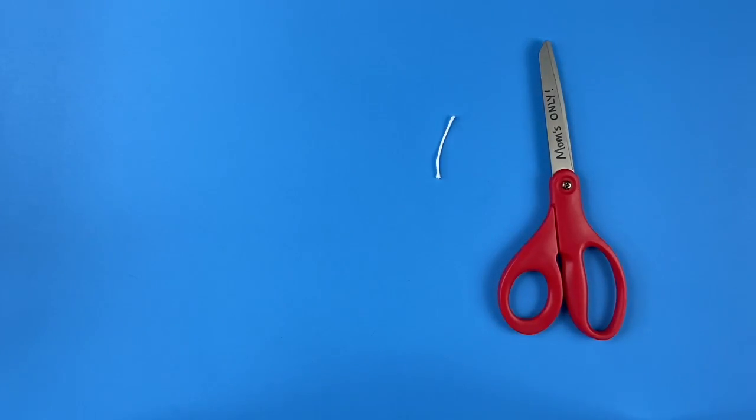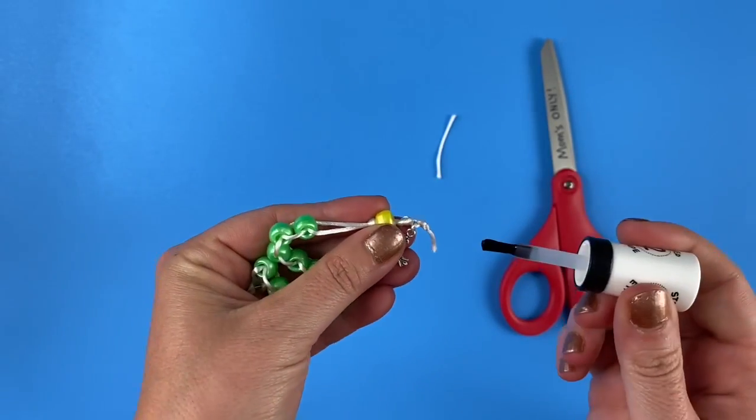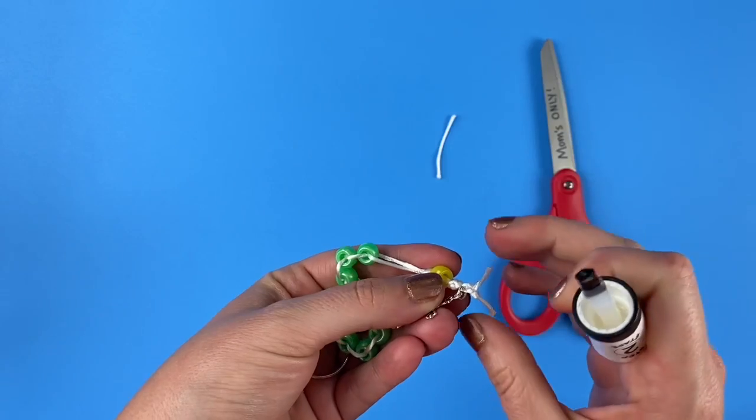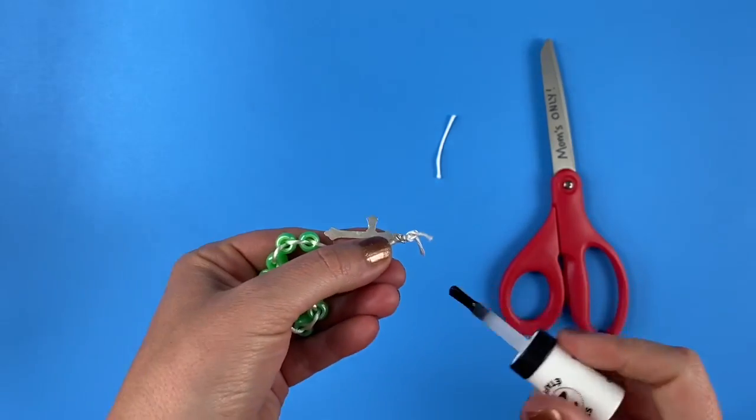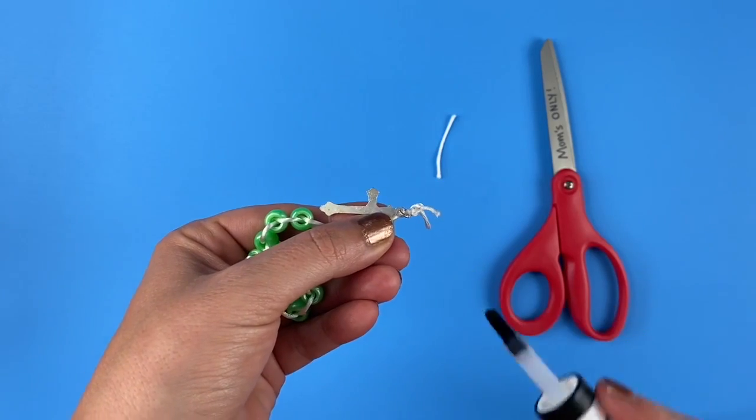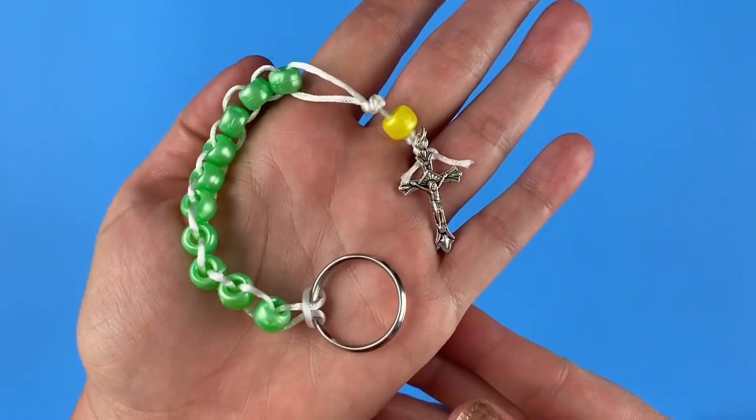Okay, so now here's the trick that will really make sure that it does not come untied. You want to take some clear fingernail polish and just dab the knot to kind of coat the knot in a clear fingernail polish. And that will keep this knot tied for a very good long time. So let that dry for just a few minutes. And then you have your completed sacrifice beads right here.